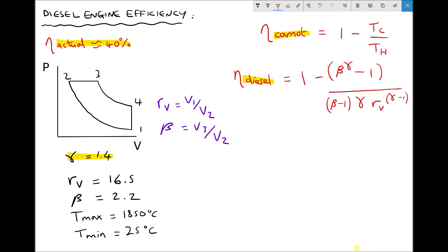In this example we're going to use a volumetric compression ratio of 16.5 and a beta value of 2.2. Now the beta value is something known as the cutoff ratio and we're going to be explaining what we mean by cutoff ratio in a moment.